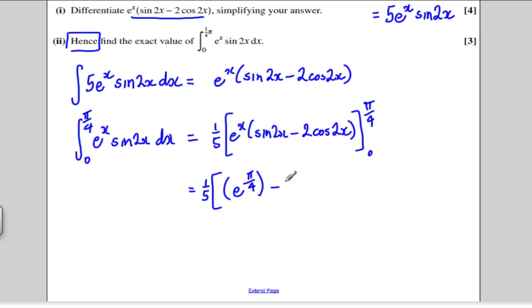And the other one, when I put 0 in here, well, e to the 0 is 1. I put 0 into sine 2x, I get 0. And I put 0 in here, I get minus 2. So this would give me e to the 0 minus e to the 0 multiplied by minus 2.